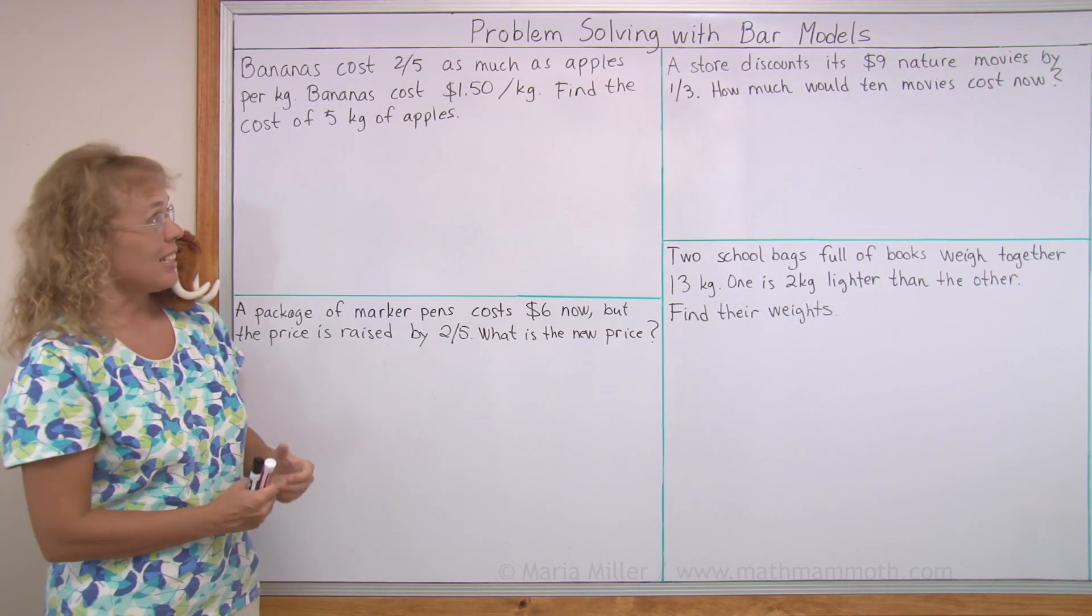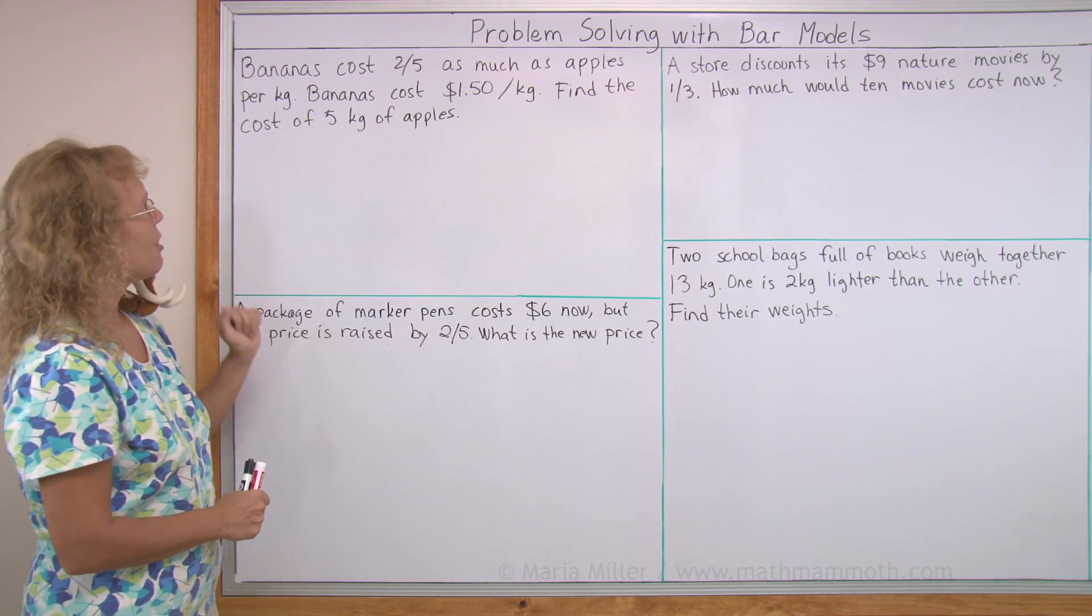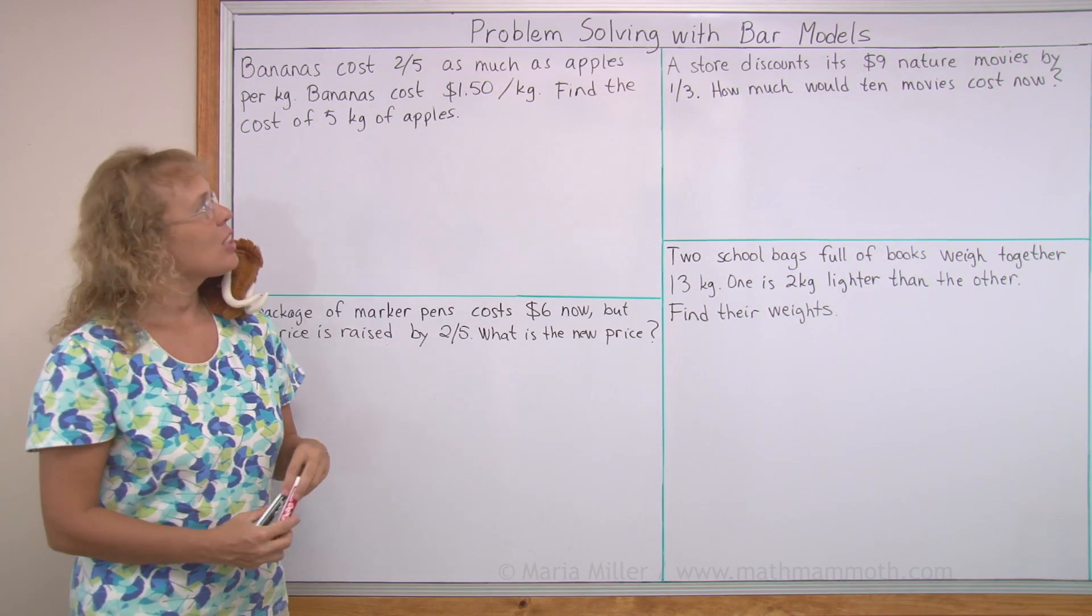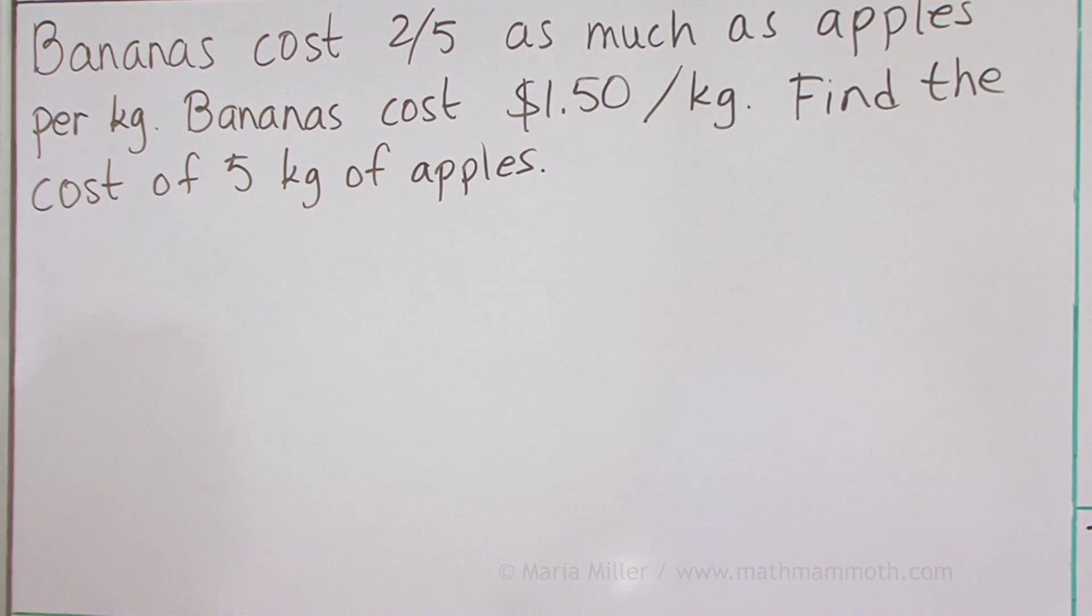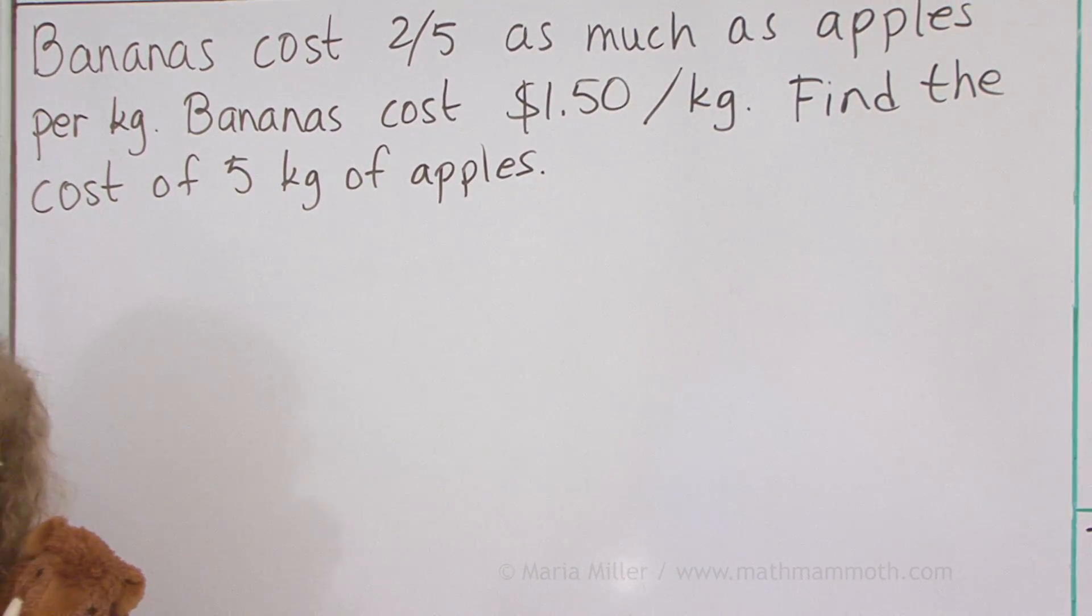Bananas cost two-fifths as much as apples per kilogram. Bananas cost $1.50 per kilogram. Find the cost of five kilograms of apples.